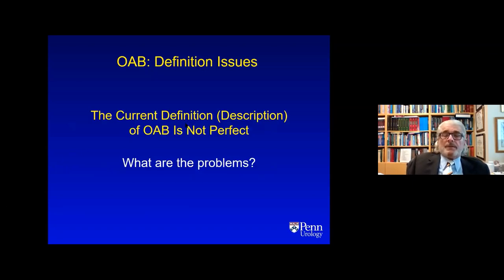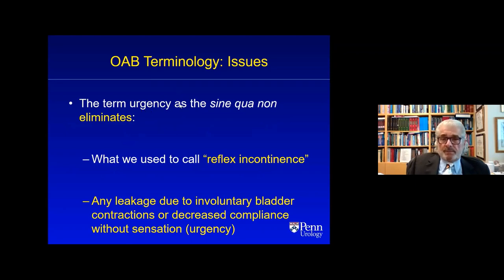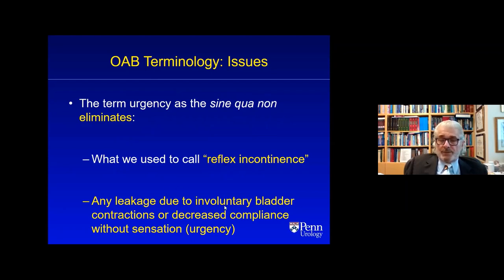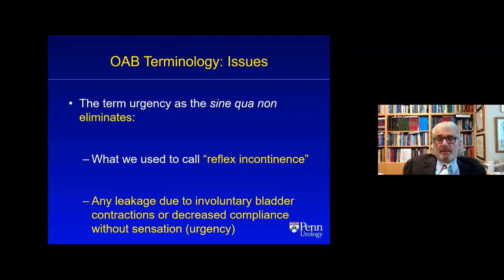The current definition of overactive bladder is not perfect. The term urgency as the sine qua non eliminates what we used to call reflex incontinence — the kind of incontinence that occurred in a spinal cord injury patient after complete transection, after spinal shock had worn off. Reflex incontinence referred to any leakage due to involuntary bladder contractions or decreased compliance without sensation. You see that in some elderly people who have detrusor overactivity causing leakage with no sensation. That's still overactive bladder to my way of thinking, but without urgency as a symptom it's not included in that category.